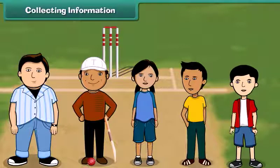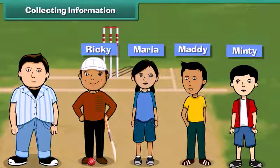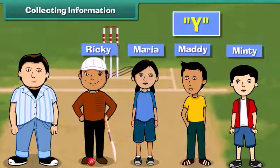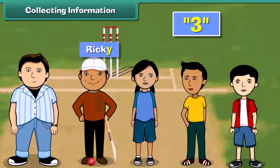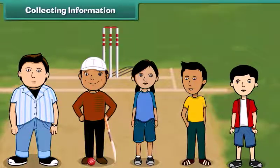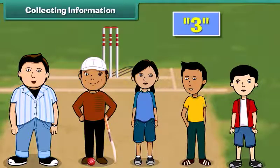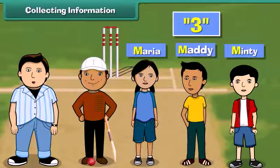Today we all friends are planning to play cricket. Meet my friends. 1, 2, 3, 4, 5 and 6. Let us play a game with their names first. How many names end with the same alphabet Y? 3 names end with the same alphabet Y. Ricky, Maddy and Minty. And how many names start with the same alphabet? Name the alphabet. Yes! Three names. Maria, Maddy and Minty begin with same alphabet M.